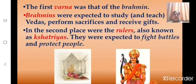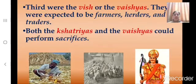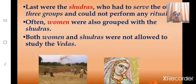The first Varna was that of the Brahmin. Brahmins were expected to study and teach the Vedas, perform sacrifices, and receive gifts. In the second place were the rulers, also known as Kshatriyas, who were expected to fight battles and protect people. Third were the Vish or Vaishyas, who were expected to be farmers, herders and traders. Both the Kshatriyas and Vaishyas could perform sacrifices. Last were the Shudras, who had to serve the other three groups — Brahmins, Kshatriyas and Vaishyas — and could not perform any rituals.